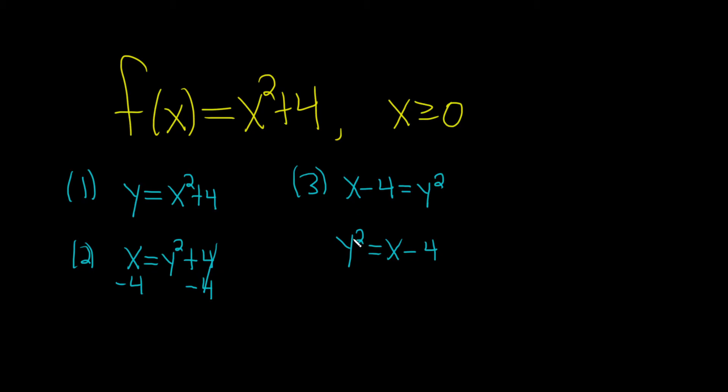All right, so now we take the square root of both sides. And whenever you take the square root of a variable squared like this, the square root property says that you always get a plus or minus. So plus or minus the square root of x minus 4.